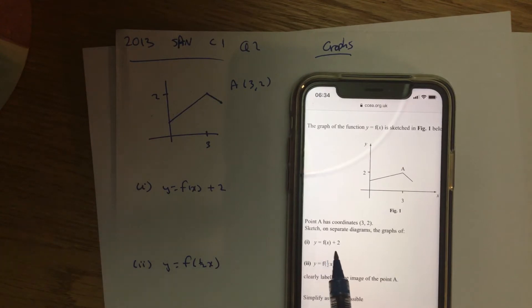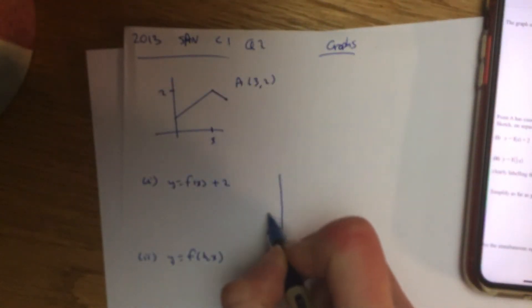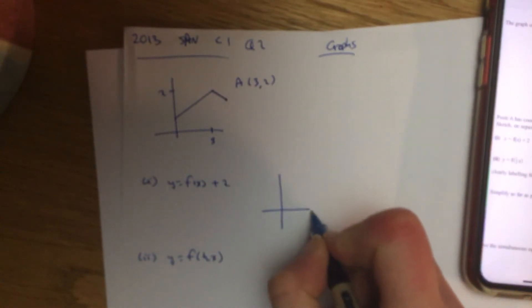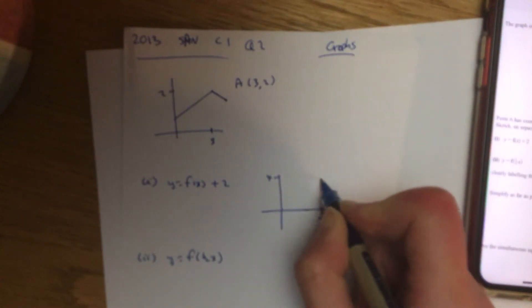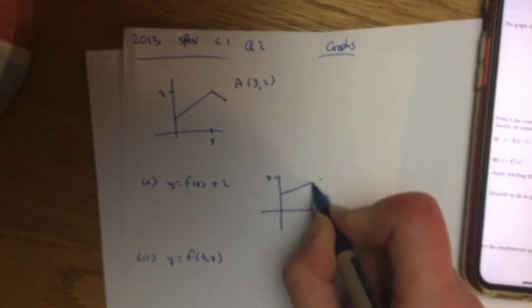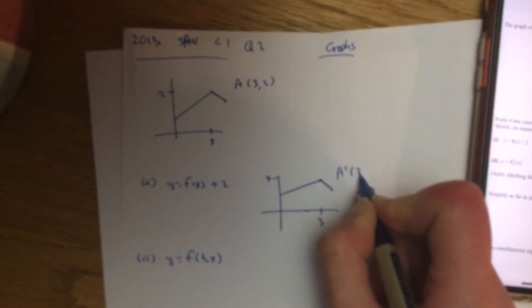I just want you to draw y equals f(x) plus 2, so lift the graph up 2. So your A point is going to be at (3, 4). But this side wasn't as steep as the far side, so A dash is (3, 4).